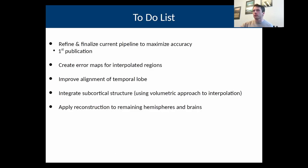I'm going over time, so I'll briefly mention the to-do list. Refine and finalize the current pipeline to maximize accuracy so that we can finish the first methodological publication, create some error maps for the interpolated regions, and then other improvements and applying this to the full set of three brains. I'm just over time, so I'll leave it at that. I don't know if we have time for questions.